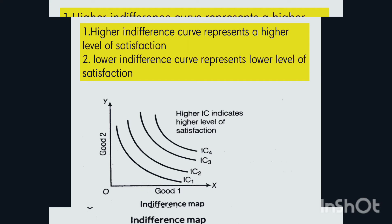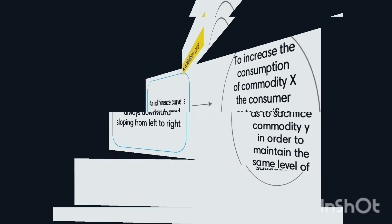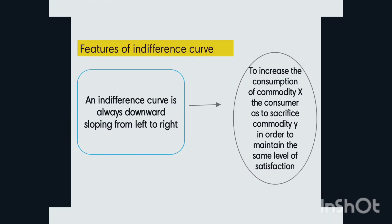That means the consumer on IC3 gets a higher level of satisfaction, and IC4 gives a lower level of satisfaction. Now, what are the features of an indifference curve?